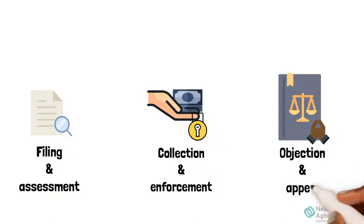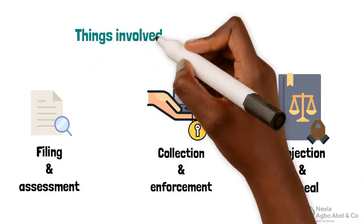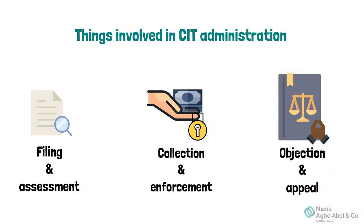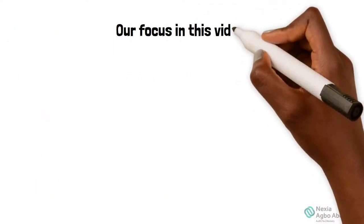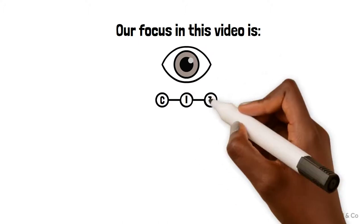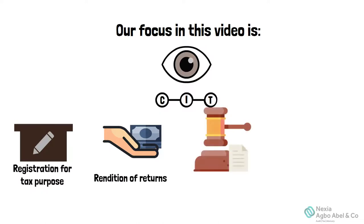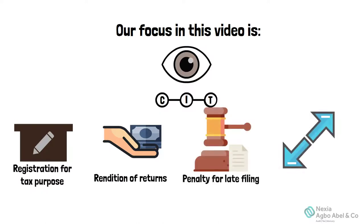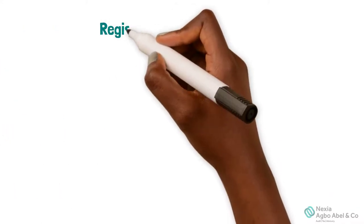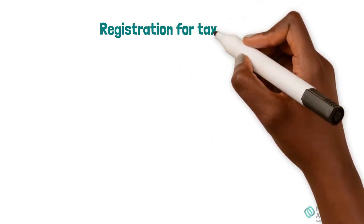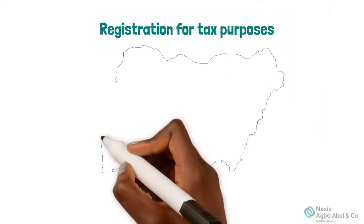Looking at the components, it might seem complex, but we are going to break it down in a series of videos covering: one, filing and assessments; two, collection and enforcement; three, objection and appeal. For the purpose of this video, we will focus on a general overview of CIT administration, including registration for tax purposes, rendition of returns, the penalty for late filing, and extension of the filing period.